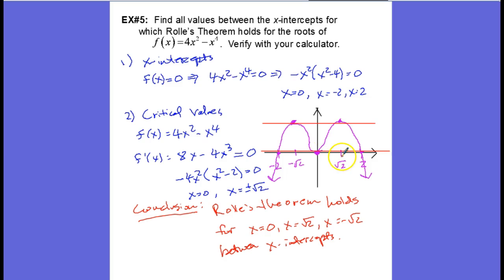And we have values -√2, 0, and positive √2 that are on this interval where the slope of the function is also zero. In other words, the tangent line is parallel or horizontal, and so this is exactly what Rolle's theorem is predicting and that's exactly what happened in the case of this example.